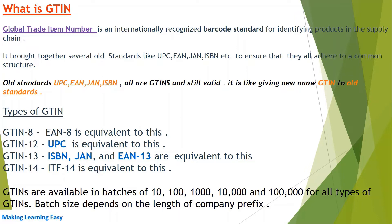It should not be the case that two different products have the same GTIN. That is not possible because GTINs come from the central organization called GS1, which takes care of the uniqueness of the barcode and the GTIN number, as we already discussed in the previous session.